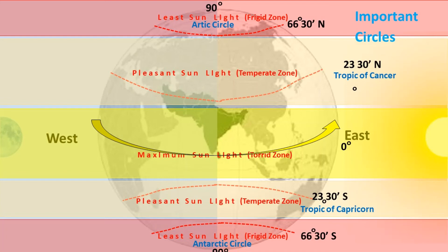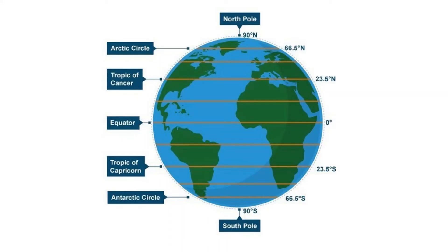Remember these important circles of latitude: the Equator at 0 degrees, the Tropic of Cancer at 23.5 degrees north, the Tropic of Capricorn at 23.5 degrees south, the Arctic Circle at 66.5 degrees north, the Antarctic Circle at 66.5 degrees south, the North Pole at 90 degrees north, and the South Pole at 90 degrees south.